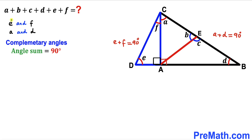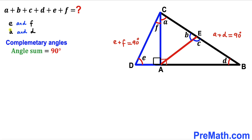Angles E and F are called complementary angles, since their angle sum equals 90 degrees. Likewise, angles A and D are complementary angles as well, since the sum A plus D also equals 90 degrees.